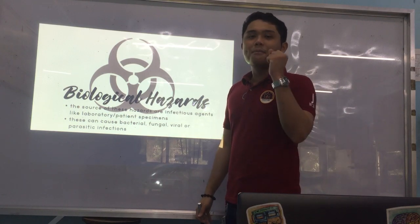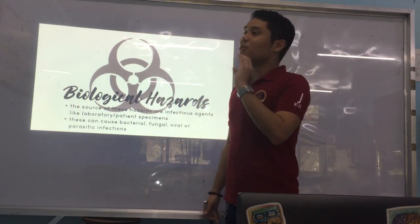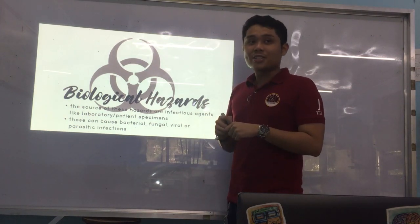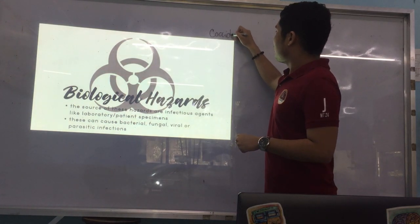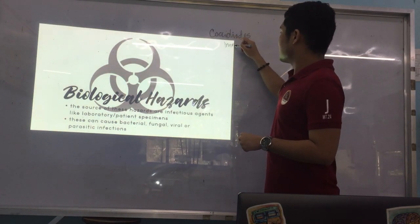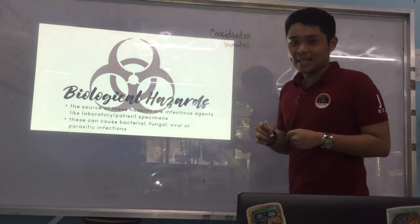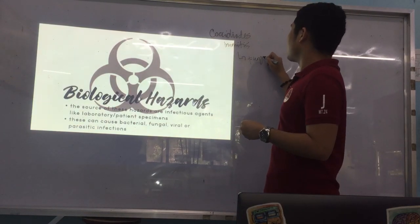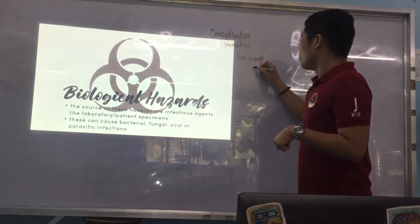What is considered to be the most harmful biological hazard in the laboratory? It is known as Coccidioides immitis. Coccidioides immitis is a fungus — you will encounter this in mycology in the second semester — and it is dimorphic.